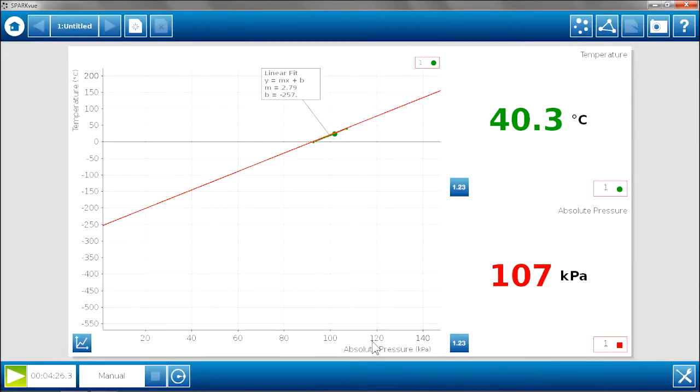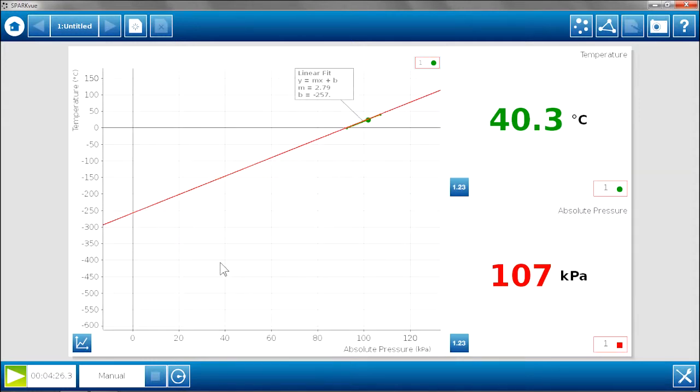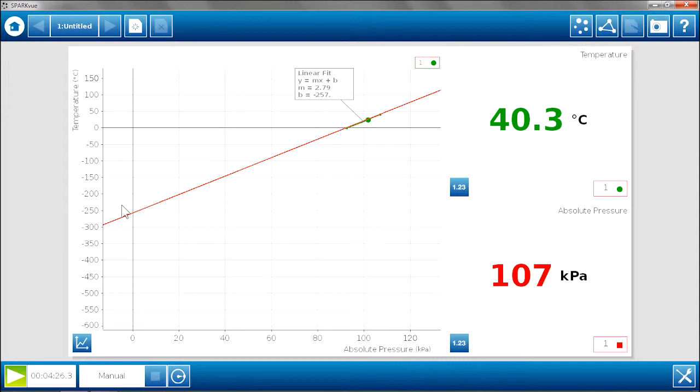So we can talk about the concept behind the absolute zero and the Kelvin scale as being the place where you can't go lower than zero pressure. And in this case, with our measurements today, that's negative 257. And we know it is supposed to be negative 273. But in the four minutes of data collection, we got a very good relationship between pressure and temperature and we are able to show the ideas behind the concept of absolute zero.